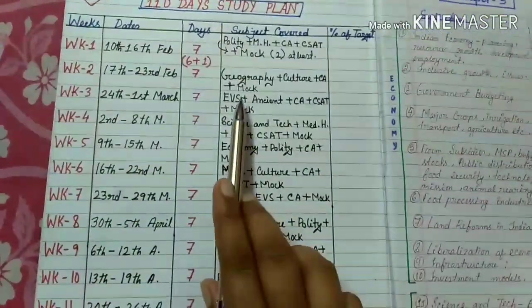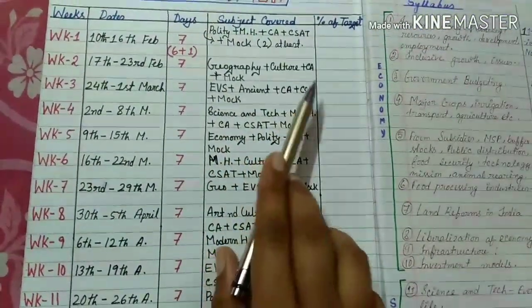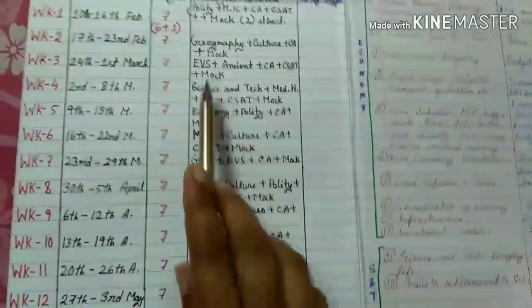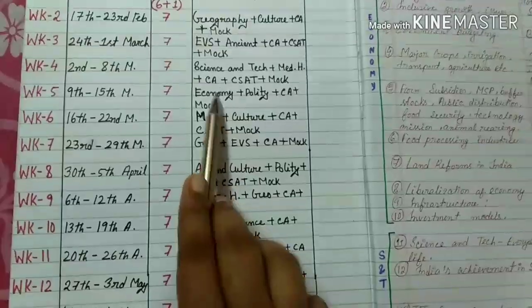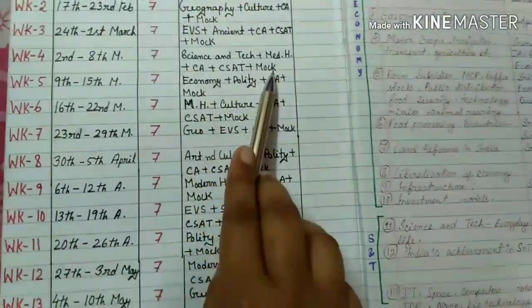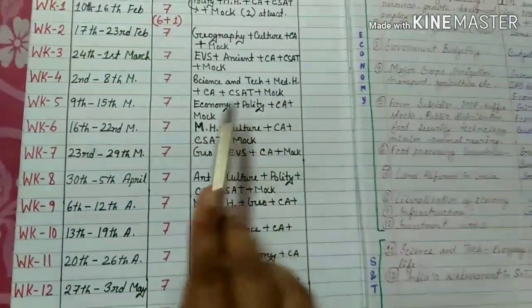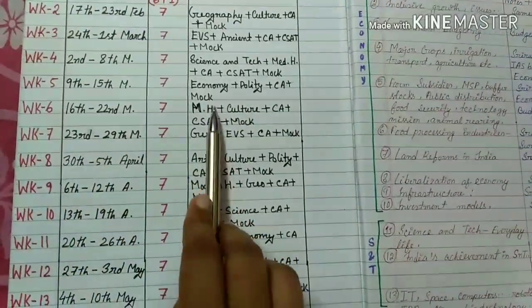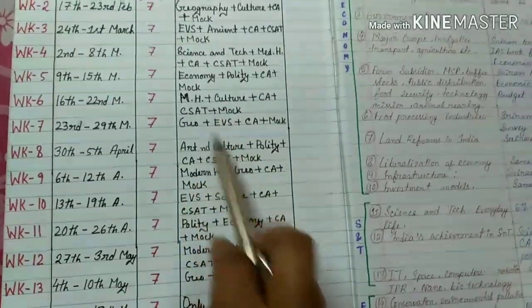The third week covers environment, ancient history, current affairs, CSAT, and mock. The fourth week covers science and tech, medieval history, current affairs, CSAT, and mock. The fifth week covers economy, polity, current affairs, and mock test. The sixth week covers modern history, culture, current affairs, CSAT, and mock.